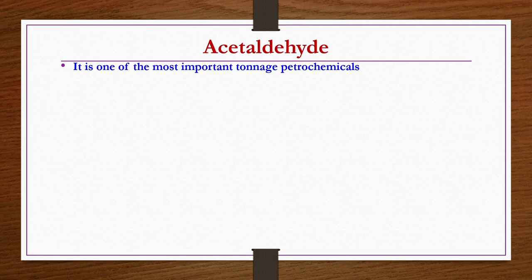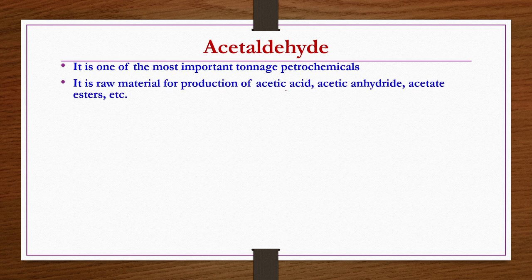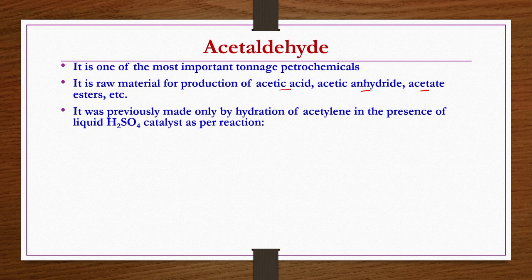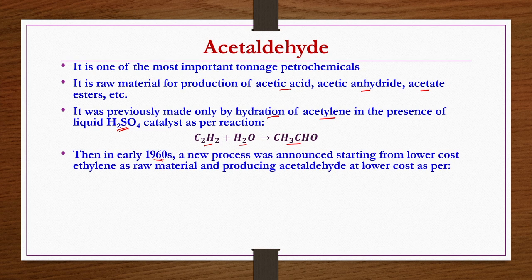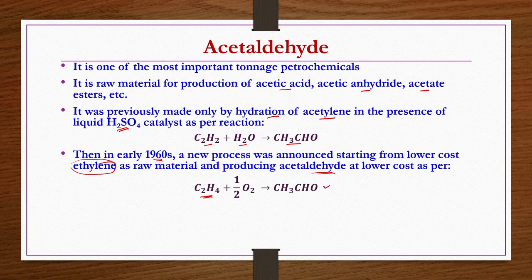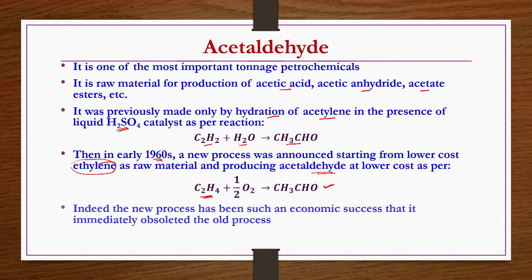We now discuss production of acetaldehyde, one of the most important tonnage petrochemicals, used as raw material for acetic acid, acetic anhydride, acetate esters, etc. The conventional process was hydration of acetylene with water in the presence of liquid H2SO4 catalyst. A new process was announced using lower-cost ethylene as raw material — simply oxidizing ethylene to give acetaldehyde at much lower cost. This new process quickly made the conventional process obsolete.